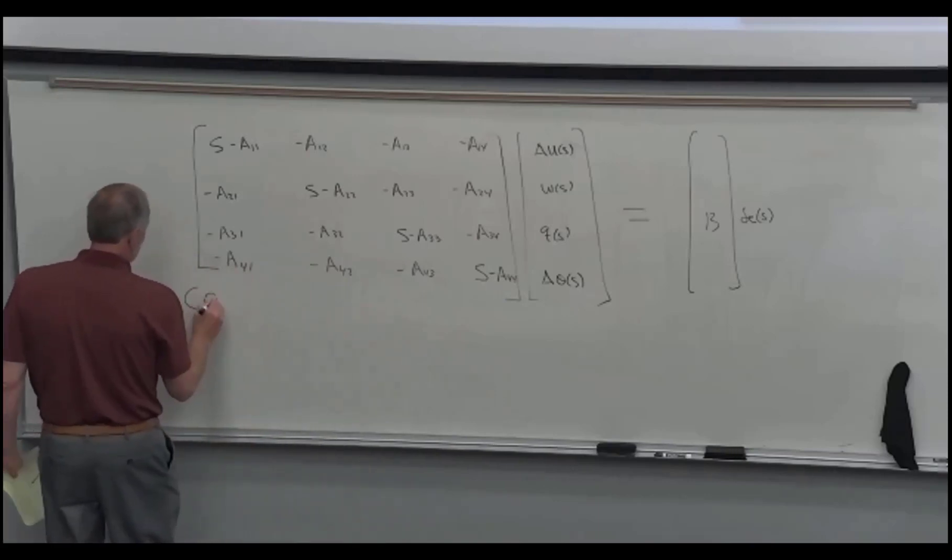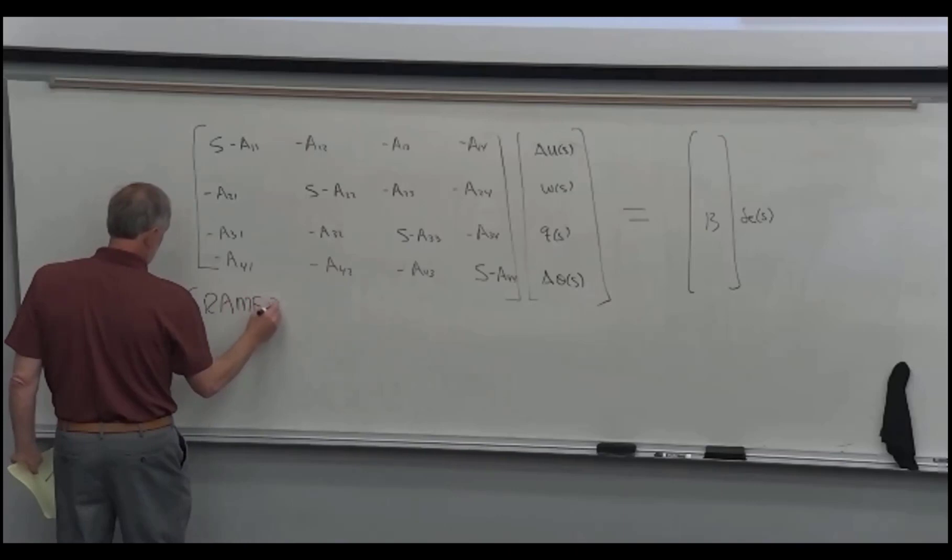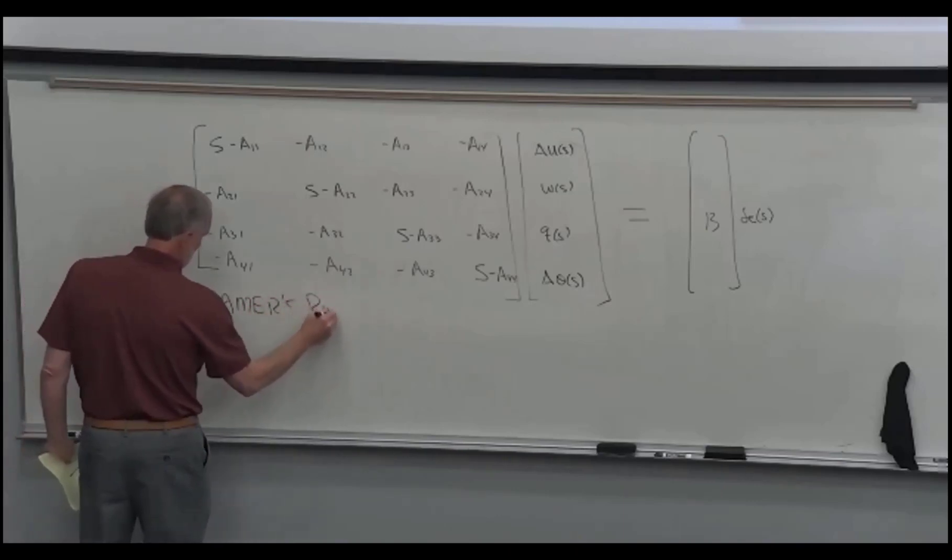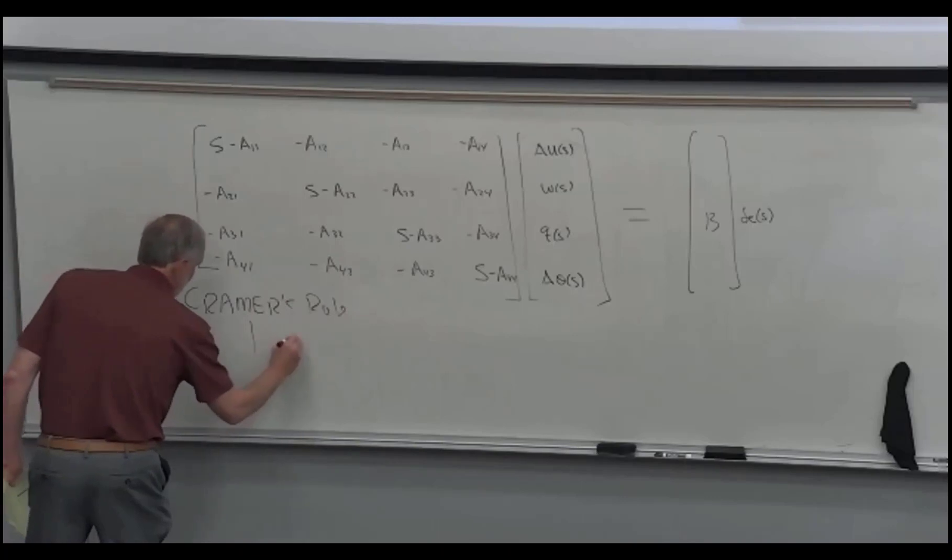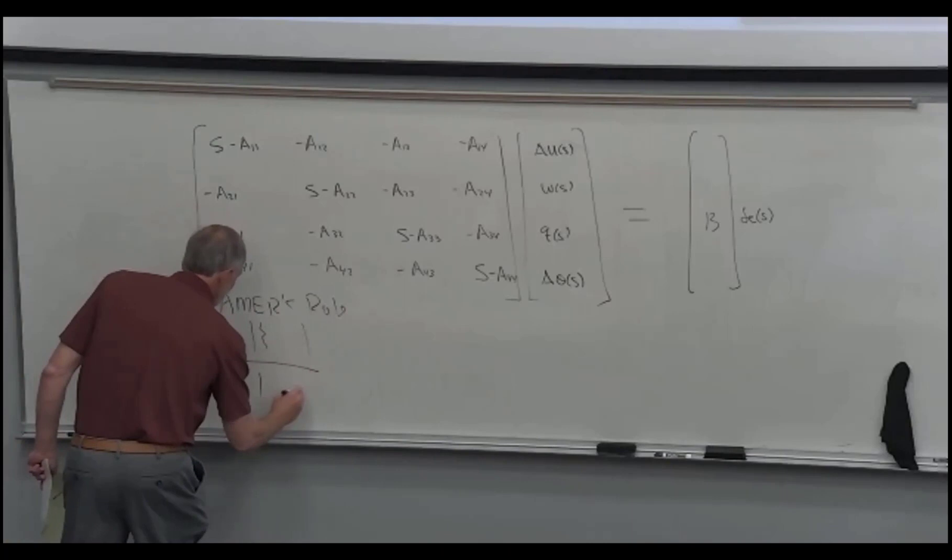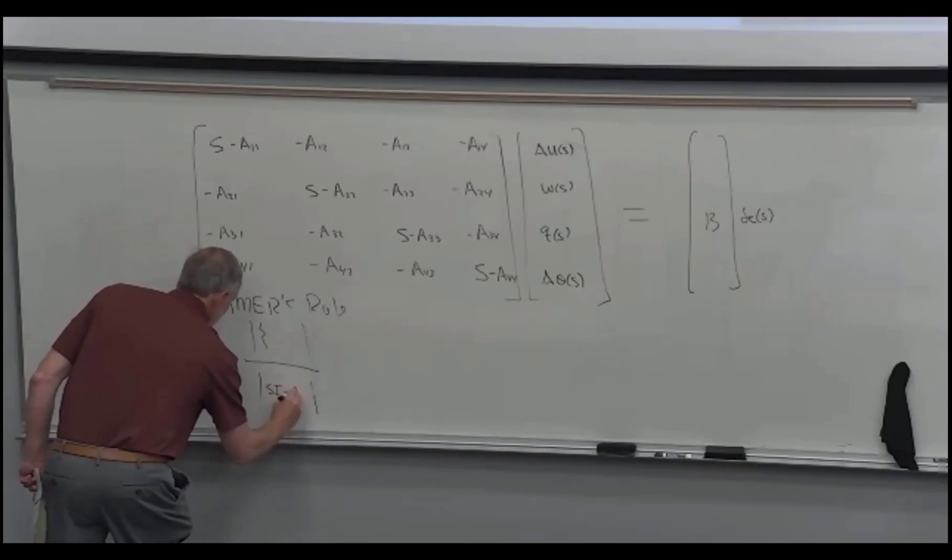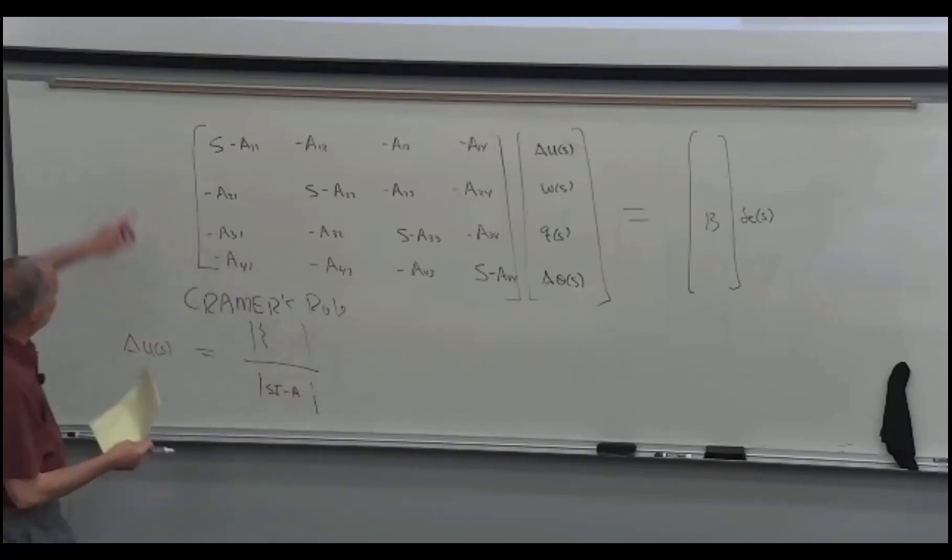Then Cramer's rule says if we want to solve for the first unknown, we take the determinant with the first column replaced, divided by the determinant of this thing, which is S I minus A. S along the diagonal is S times the identity, and the A matrix is just everything else.